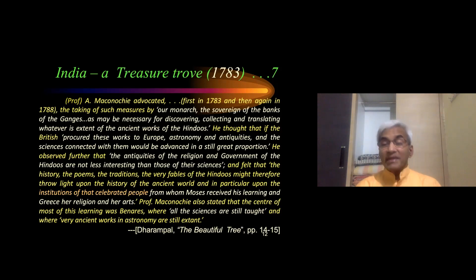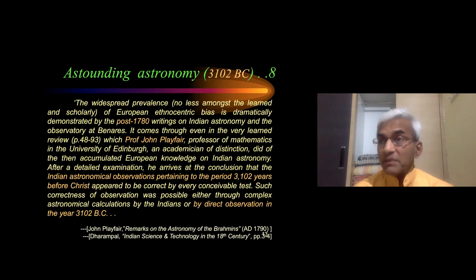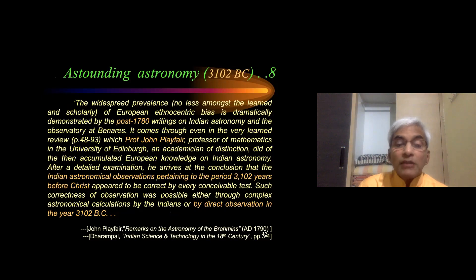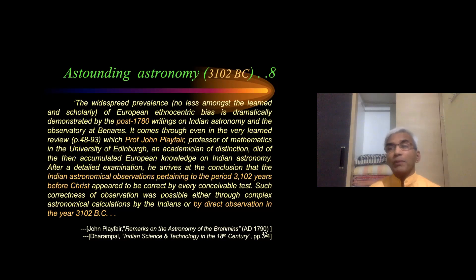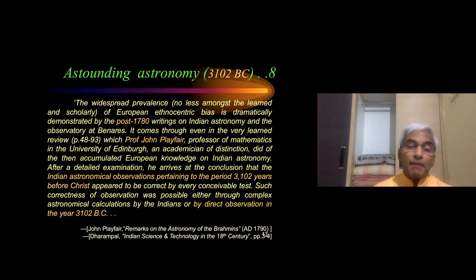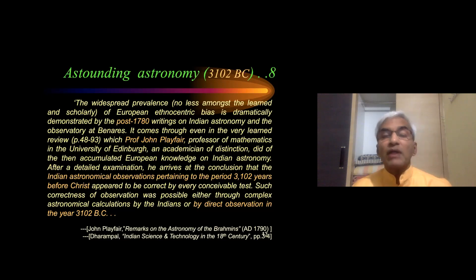At this time, the Aryan invasion theory had not been proposed. Around the same time — 1780 to 1790 — there is a quotation from Professor John Playfair of Edinburgh University, a mathematician, who wrote a review paper on the knowledge gained from India in the field of astronomy. It is a 40–45 page comprehensive review article. One of his observations is very interesting. The article was titled 'Remarks on the Astronomy of the Brahmins,' written in 1790.